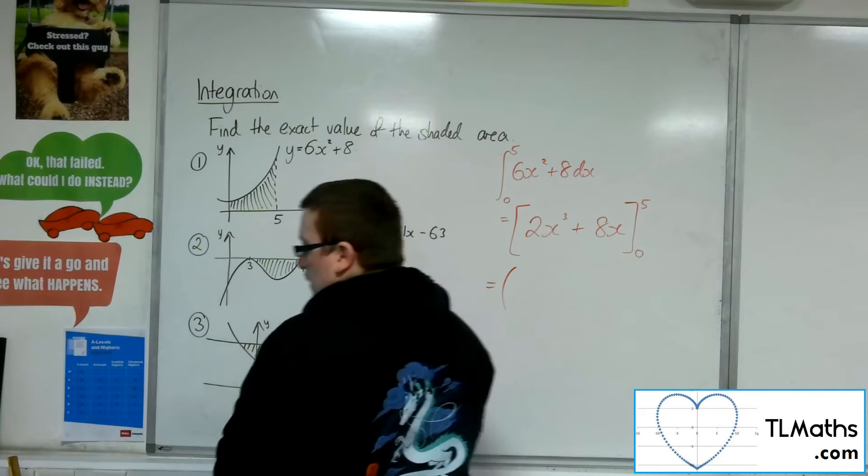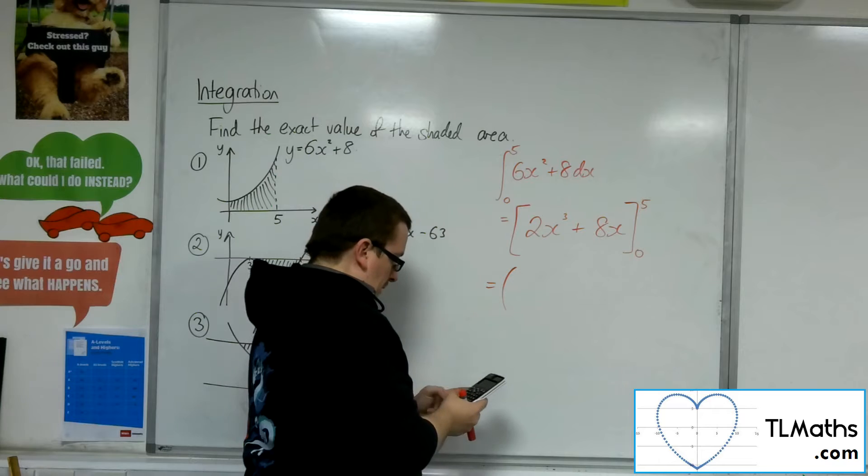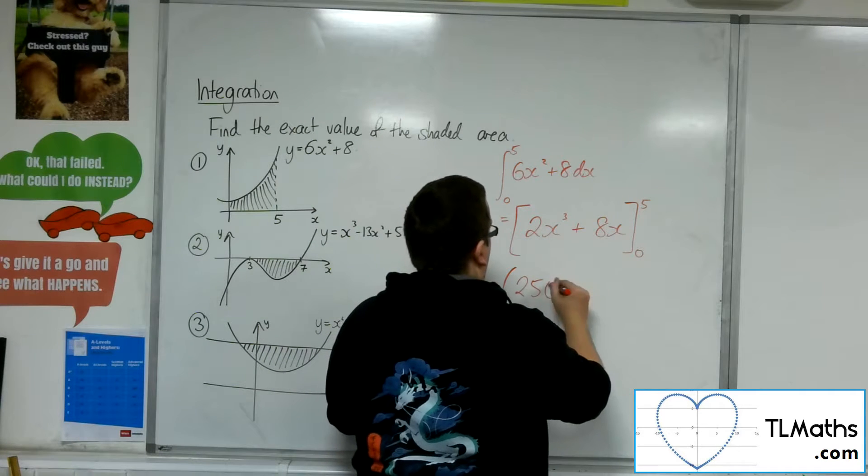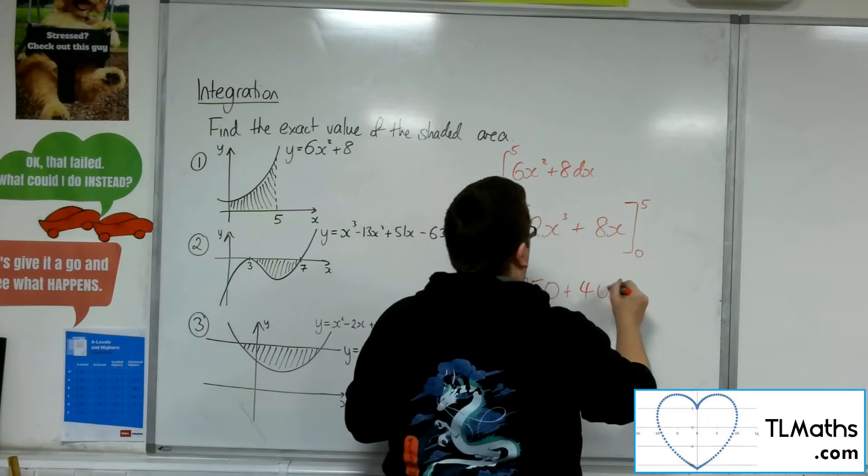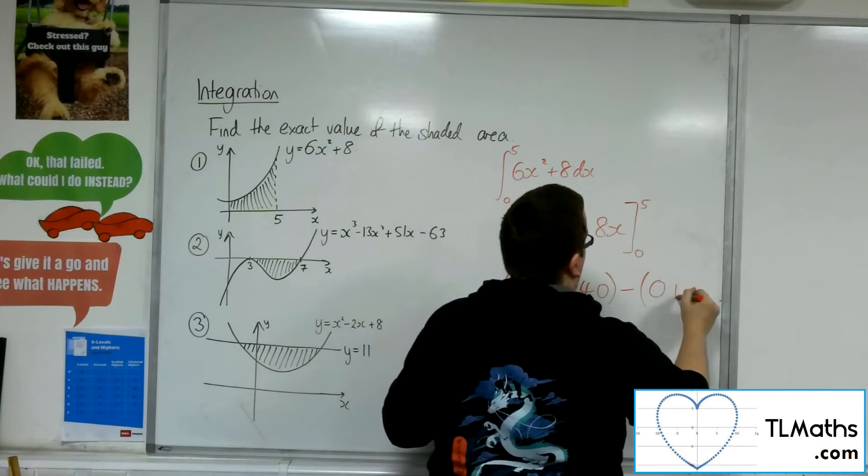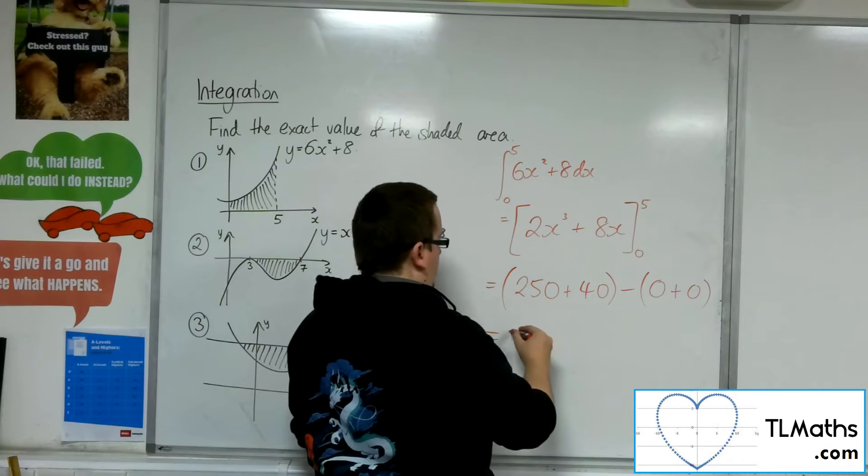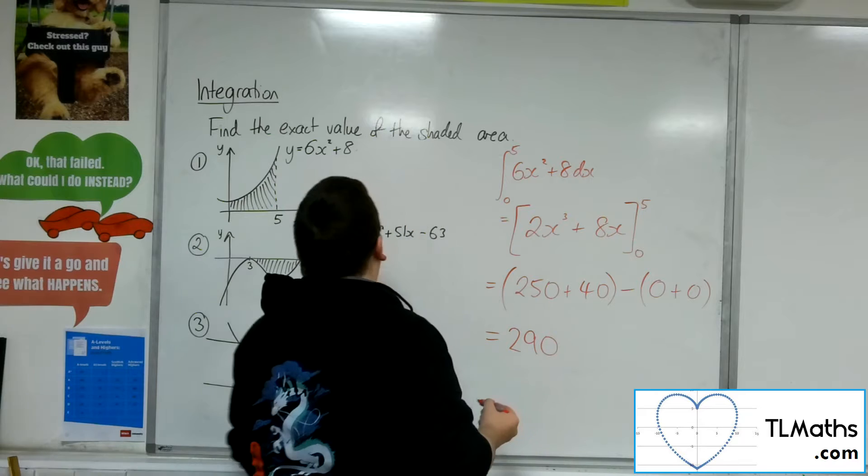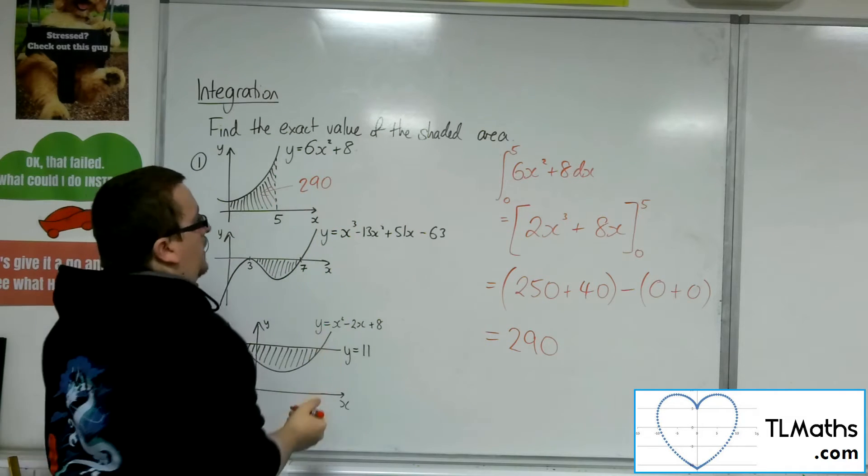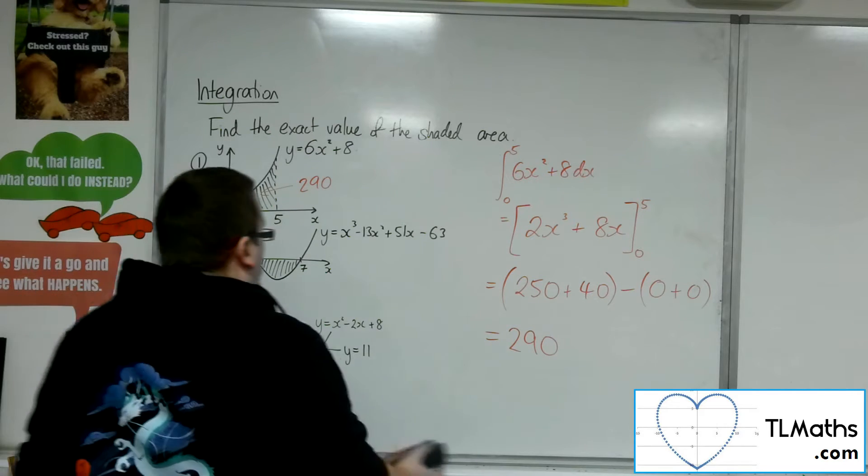So, I'm going to substitute the 5 in first. We've got 2 lots of 5 cubed, so 250, plus 8 lots of 5, so 40. Take away substituting the 0, 0 plus 0. And so, we've got 250 plus the 40 is 290. The exact area of that region is 290. Well, that's number 1.